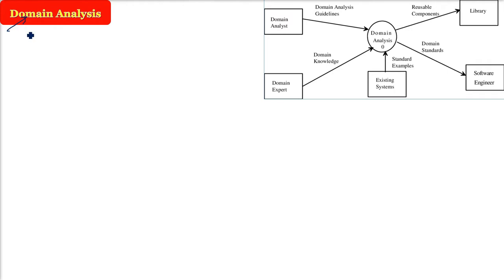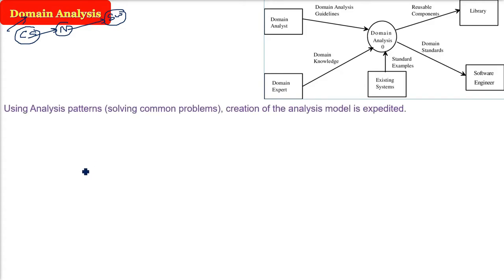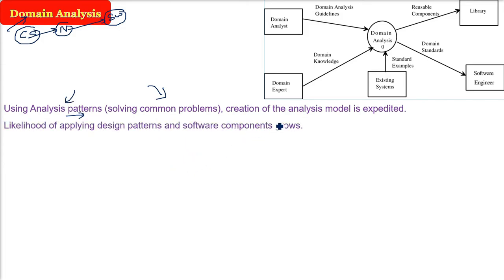Domain analysis: domain is all about the field you are working in. For example, you are working in computer science — that is a domain. Networking in computer science is another domain. This is the actual piece of work where the software is going to be implemented, executed, and worked upon. Here comes the analysis pattern — that is, solving very common problems. Every software developer with experience knows that certain things will come up again and again. Once we create the analysis model of already-known common problems — such as analysis patterns — we can use and reuse it.